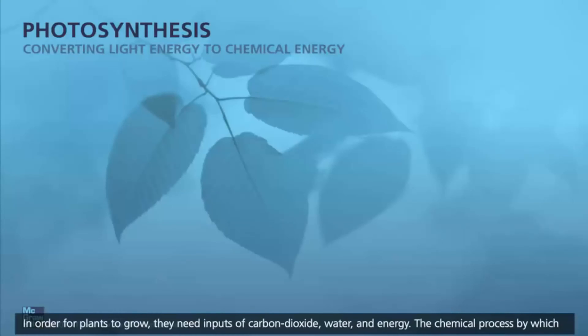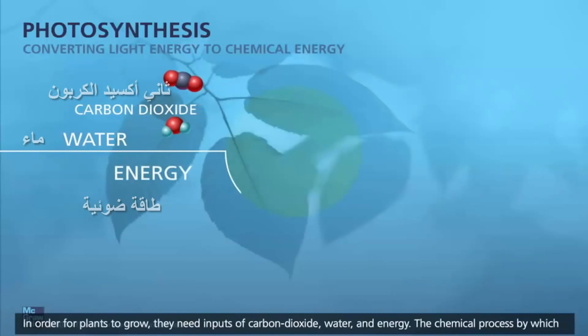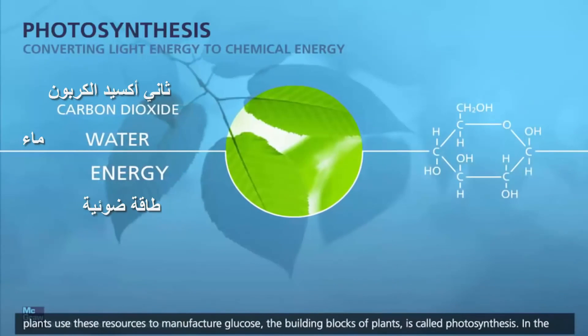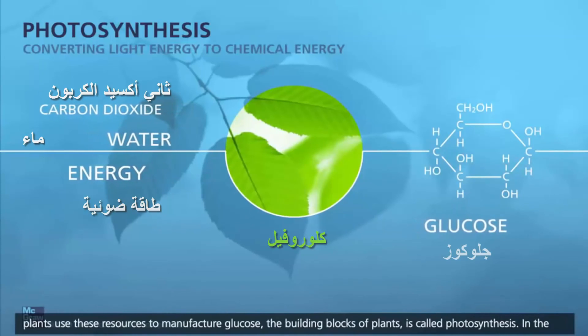In order for plants to grow, they need inputs of carbon dioxide, water, and energy. The chemical process by which plants use these resources to manufacture glucose, the building blocks of plants, is called photosynthesis.